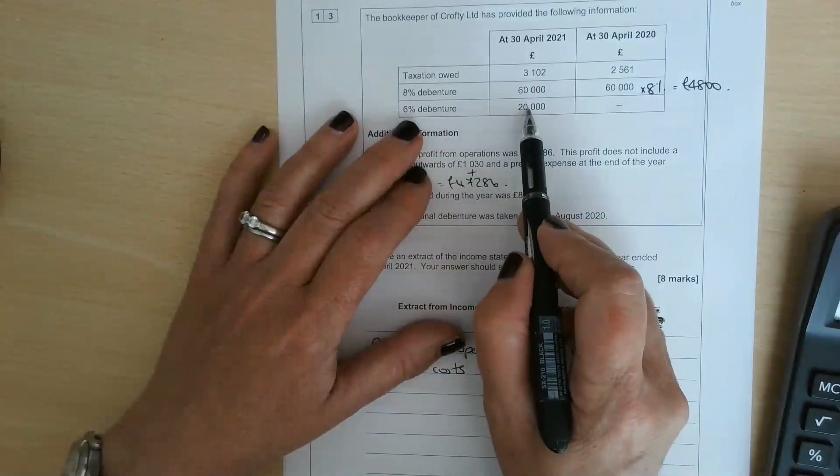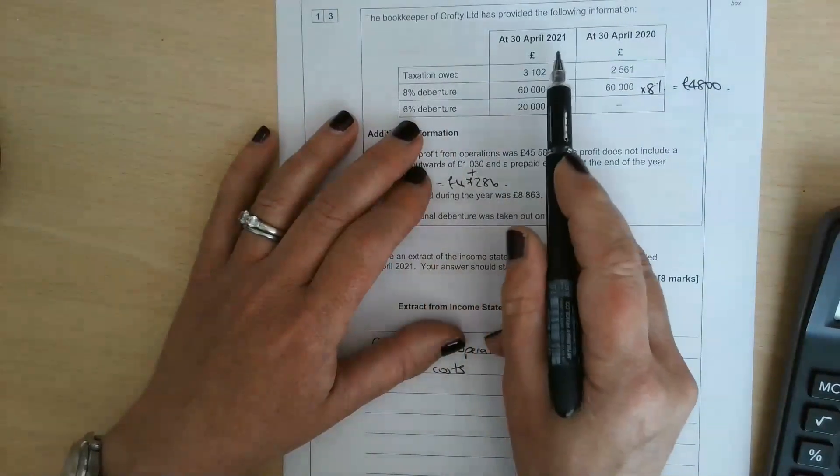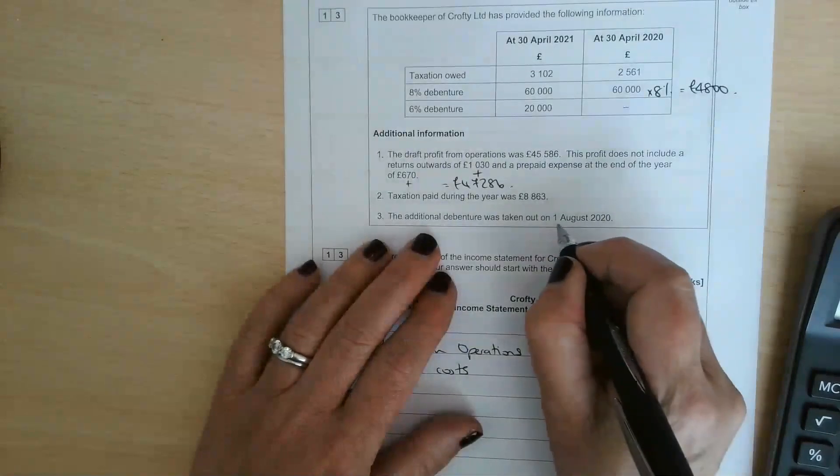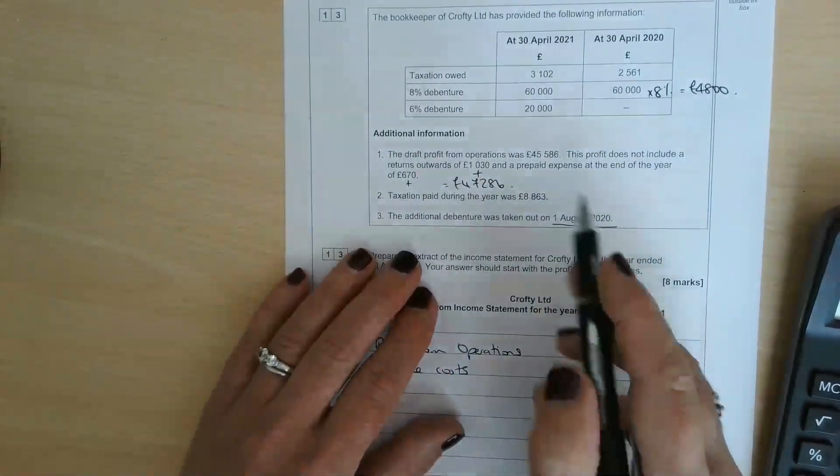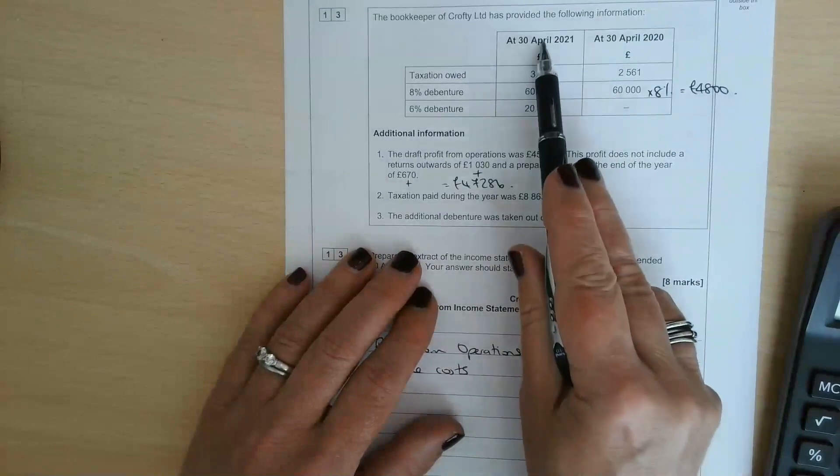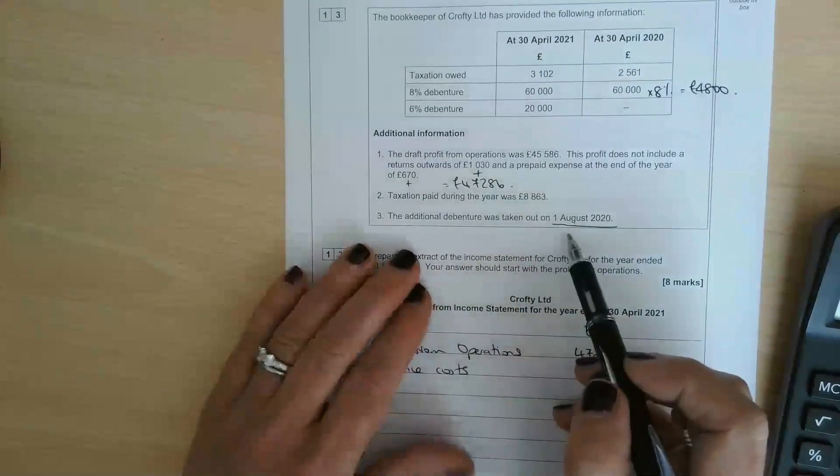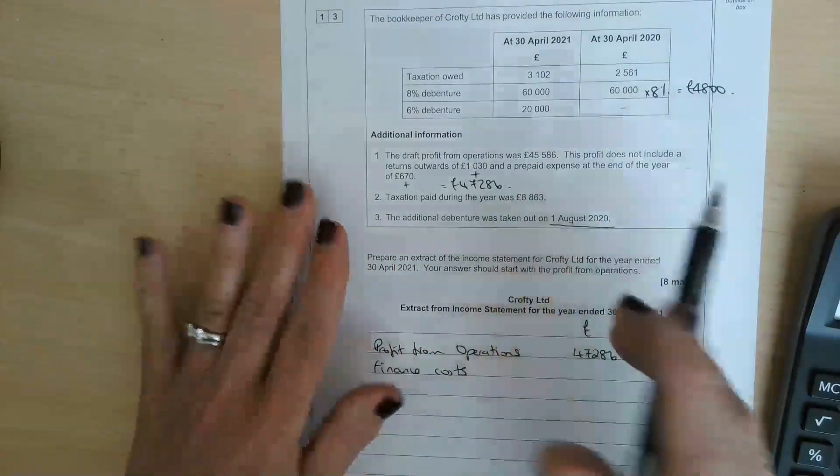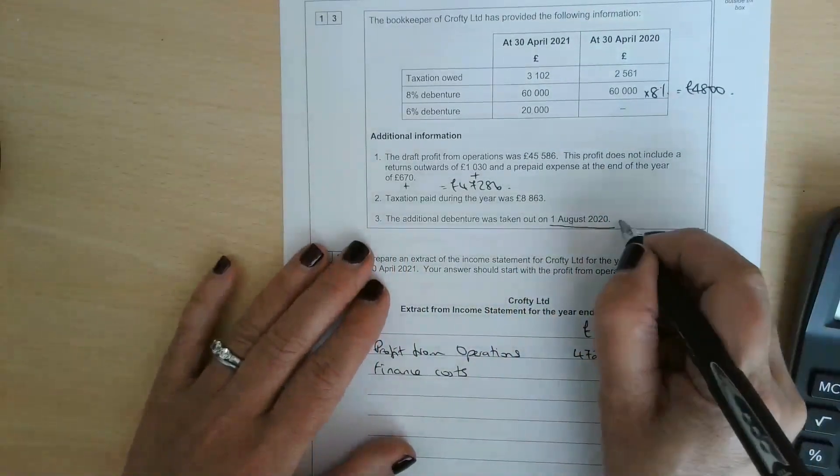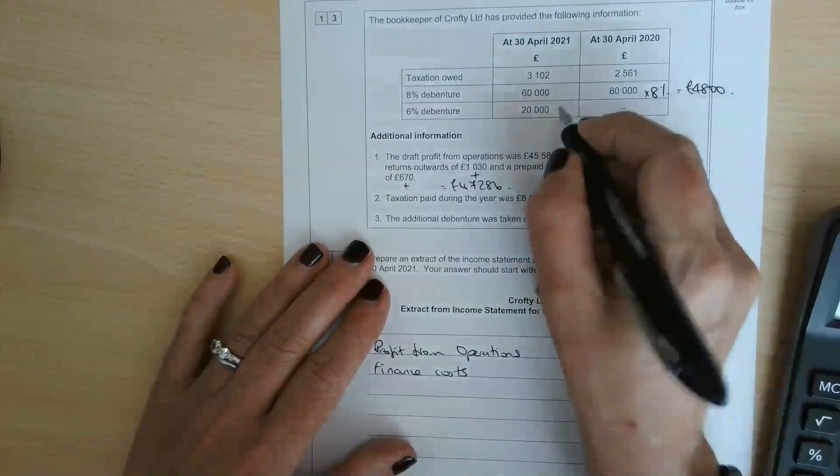They had a 6% debenture that was £20,000, but that was taken out partway through the year on the 1st of August. Let's work out how many months we owed that for between the 1st of August and the 30th of April. August, September, October, November, December, January, February, March, April - nine months outstanding.